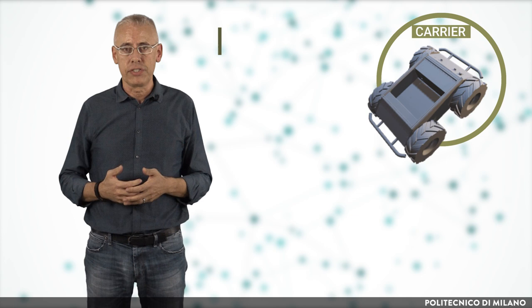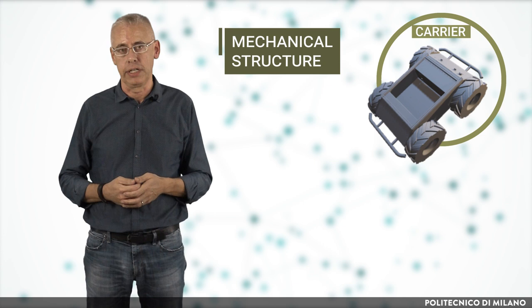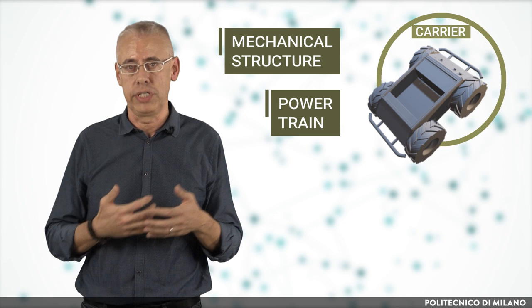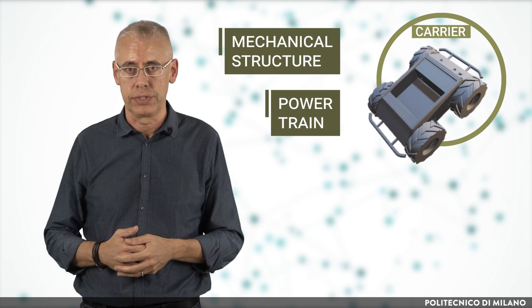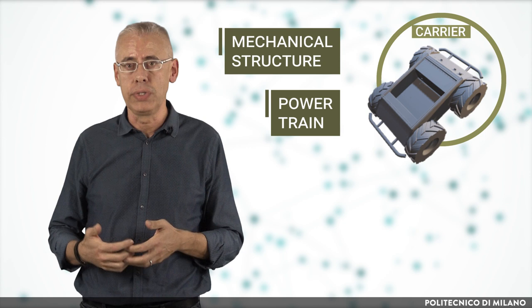Let's take a closer look into the typical building blocks of an intelligent vehicle carrier. The mechanical structure defines the shape, material and the motion mechanism. The powertrain defines the energy flow from the energy source — typically a battery or a fuel tank — to the motion mechanisms: fixed wings, wheels, or propellers, and how it will be interfaced to the control unit responsible for navigation.